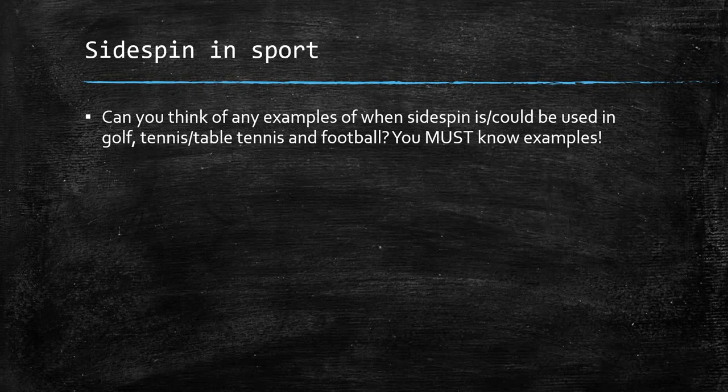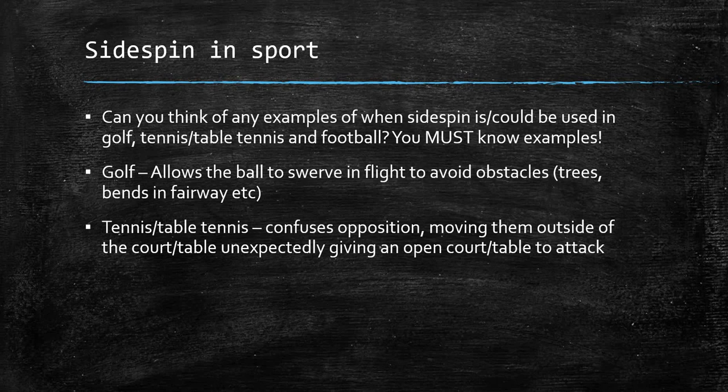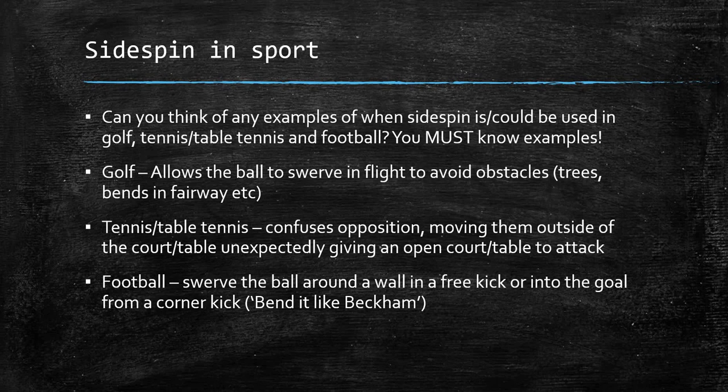Side spin in sport: consider examples of when side spin can be used. In golf, it can allow the ball to swerve in flight to avoid obstacles such as trees or bends in the fairway. In table tennis and tennis, it can confuse your opponent, moving them to the outside of the court or table unexpectedly, giving an open court or table to attack. In football, 'bend it like Beckham' — you can swerve the ball around a wall in a free kick or into the goal from a corner kick.